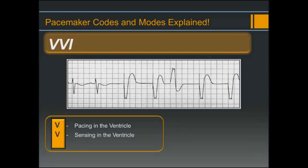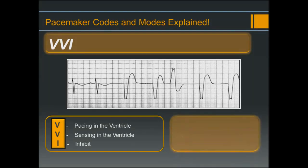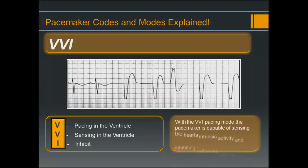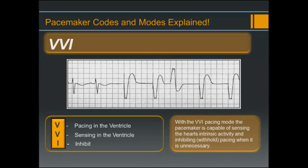VVI pacing mode: we now have pacing in the ventricle, sensing in the ventricle, and a response to sensing that will be to inhibit. With the VVI pacing mode, the pacemaker is capable of sensing the heart's intrinsic activity and inhibiting or withholding pacing when it's unnecessary.